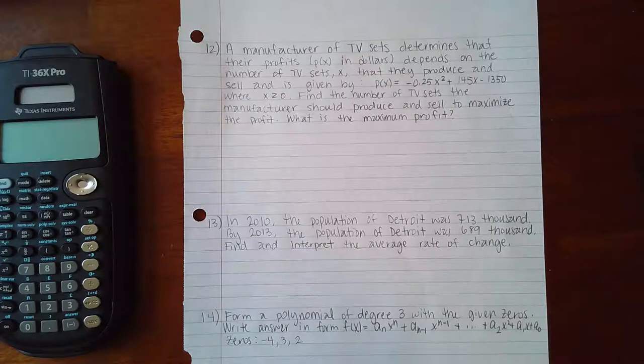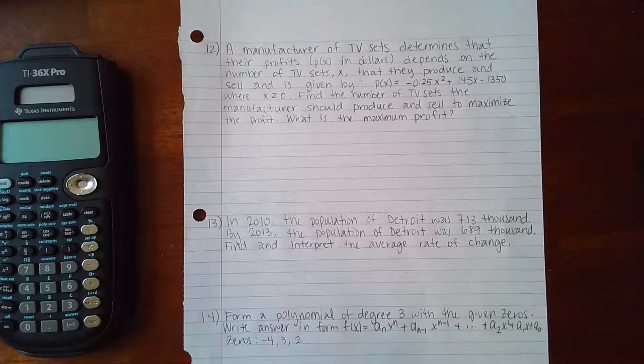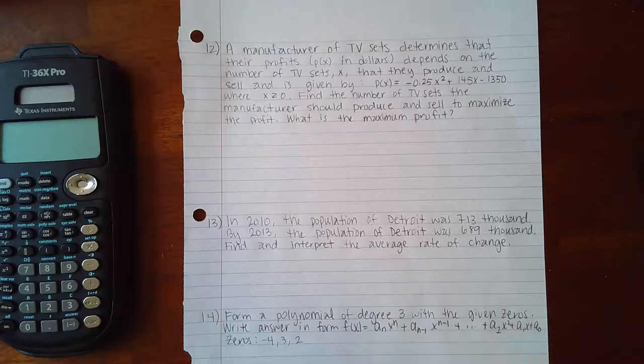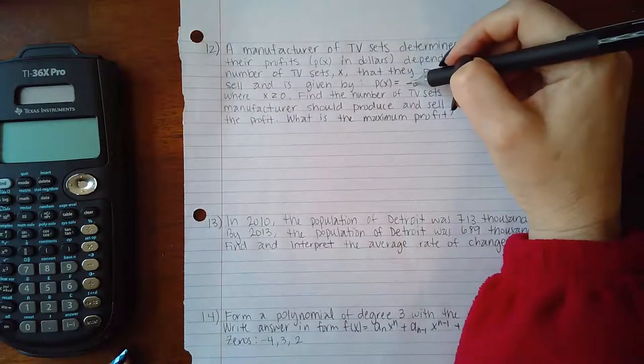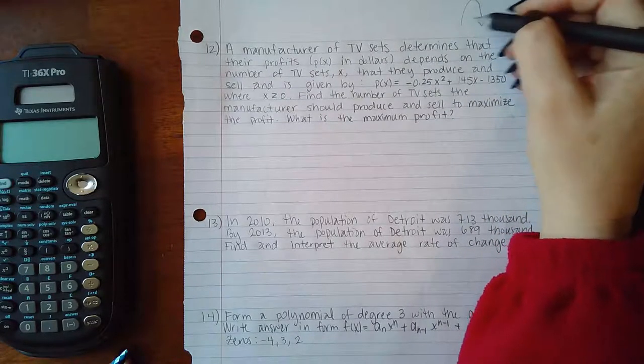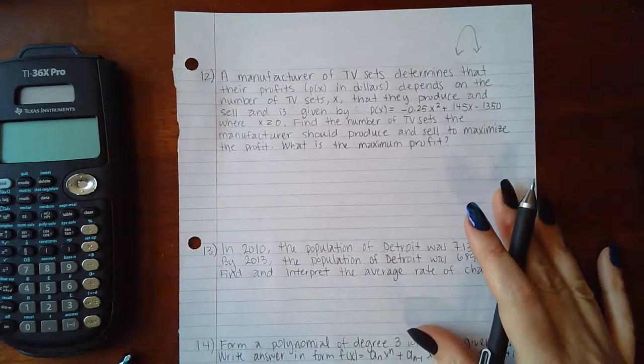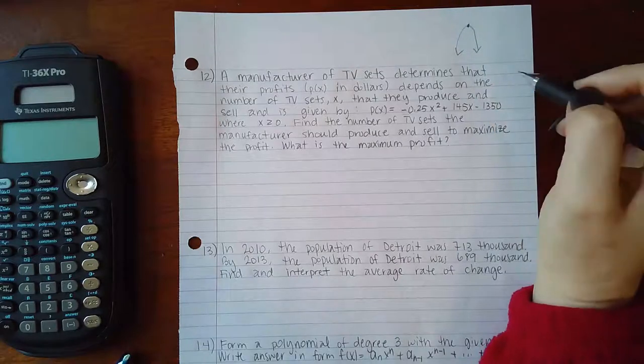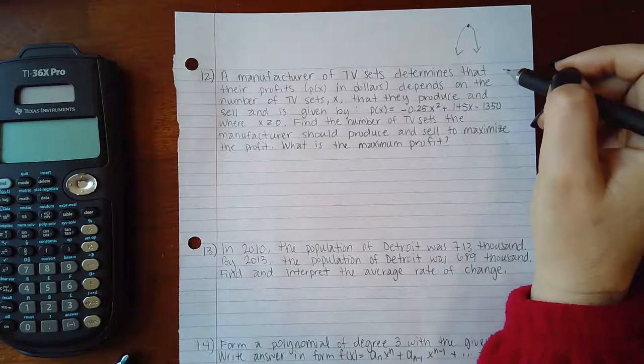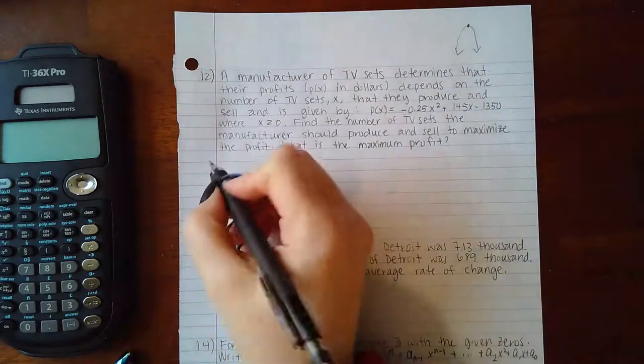Find the number of TV sets the manufacturer should produce and sell to maximize profit. What is that maximum profit? This is a quadratic, and it's a downward-opening quadratic. The graph will look like this, and we know the maximum will occur at this little peak, which is called the vertex. We have a formula for the vertex.